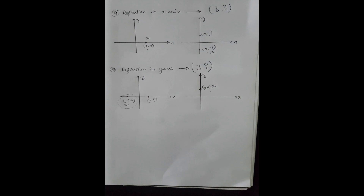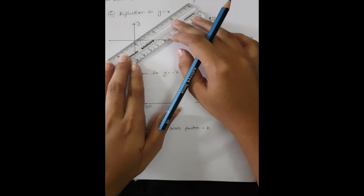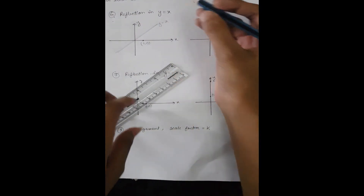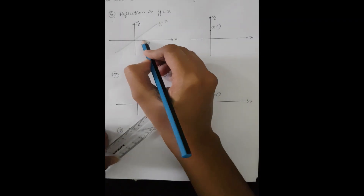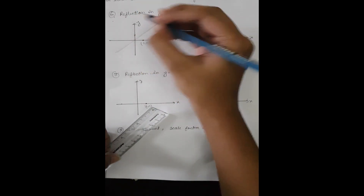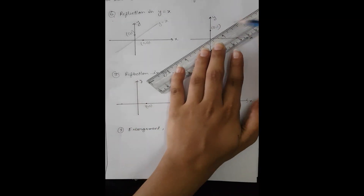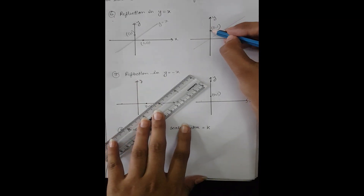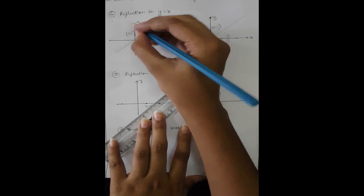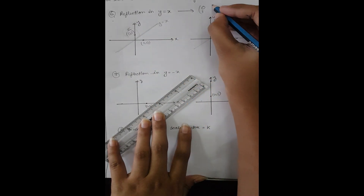For reflection in the y = x axis, we first draw the line y = x. If we reflect the point (1, 0) along this line, the image will be on the opposite side — that is (0, 1). And the point (0, 1) will move to (1, 0). So the matrix will be [0, 1; 1, 0].